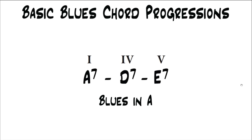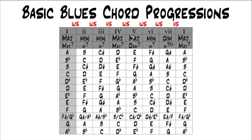So basic blues is a one, four, five, and in A that's A7, D7, E7. It doesn't follow along diatonically with the major scale in one key. Because technically, if you were looking at A7, D7, E7 from major scale theory, they're all five chords — A7 is in the key of D, D7 is in the key of G, and E7 is in the key of A. So technically each one of those chords is in a different key. But with blues, you don't really have to think about it that way.